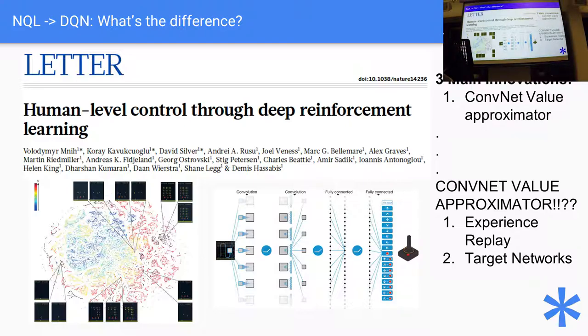And so there's two main things that they did that allowed them to train these ConvNets stably, right? And that's experience replay and use of a target network. This is now the ground level of deep reinforcement learning. Deep Q network is the base stable method. And so to implement the base stable method, you have to do these two things.